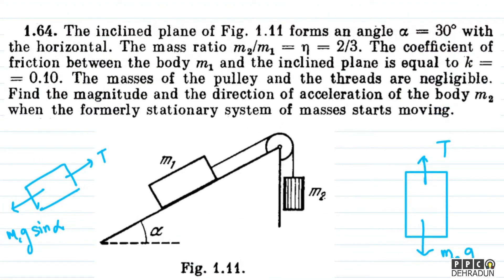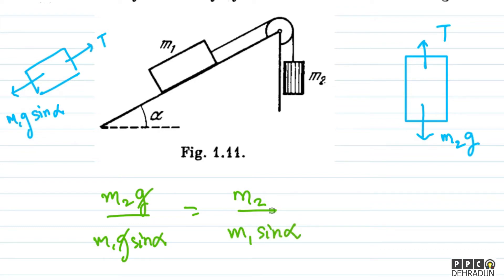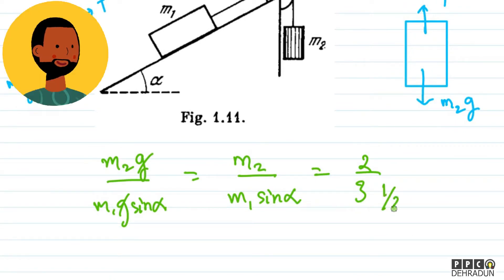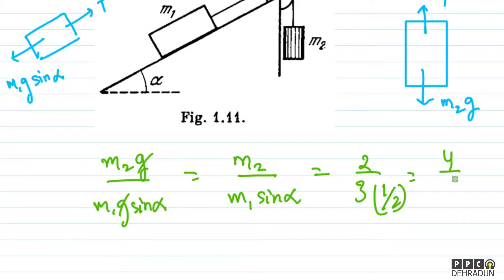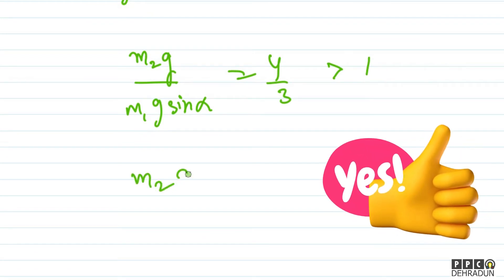As given in the problem, m2 upon m1 equals 2 upon 3. Let me compute m2g divided by m1g·sin(alpha) — the g's cancel out, leaving m2 upon (m1·sin alpha). We know m2/m1 equals 2/3, and sin(alpha) with alpha equal to 30 degrees gives sin(30°) equal to 1/2. So this ratio becomes (2/3) divided by (1/2), which equals 4/3. This is obviously greater than 1, meaning m2g is greater than m1g·sin(alpha).